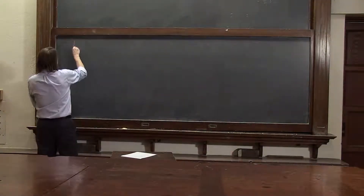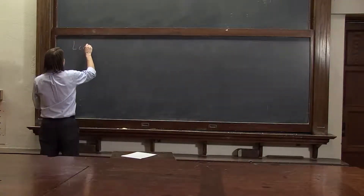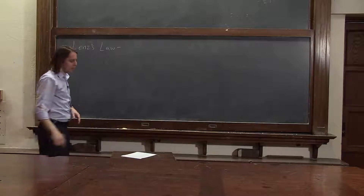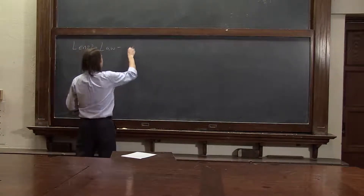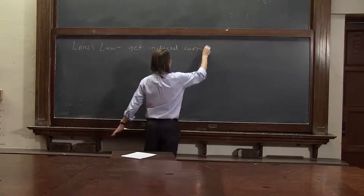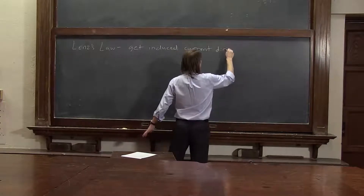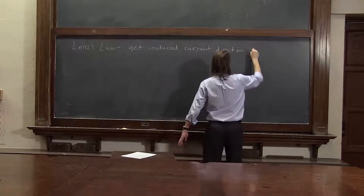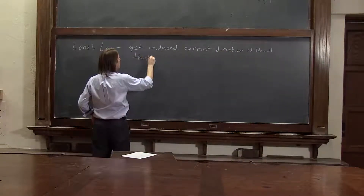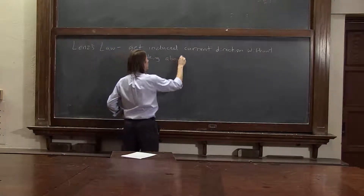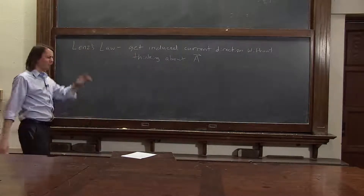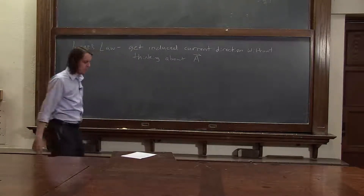Here is the freshman physics definition — meaning the definition that's useful if you're doing homework problems — of Lenz's law. Basically, it's a way to get the induced current direction without thinking about A. So there's always that step where it's like, which way was A? Which way is the current positive? You can skip all that if you use Lenz's law.